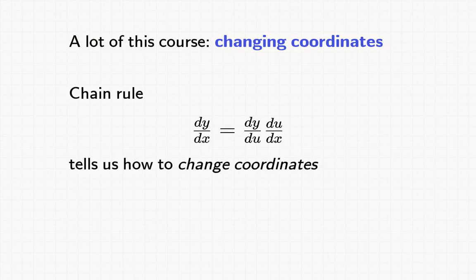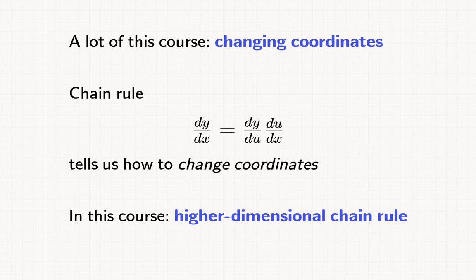In single variable calculus, the chain rule describes what happens to derivatives under a change of coordinates. In this course, we'll study a higher dimensional version of the chain rule, which will look a lot more complicated. But it's doing the same thing.